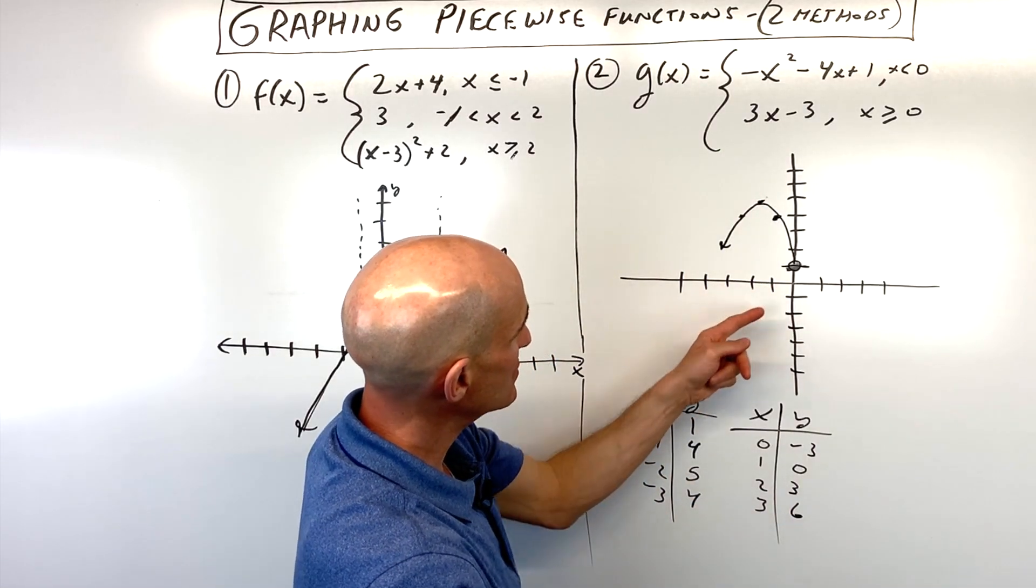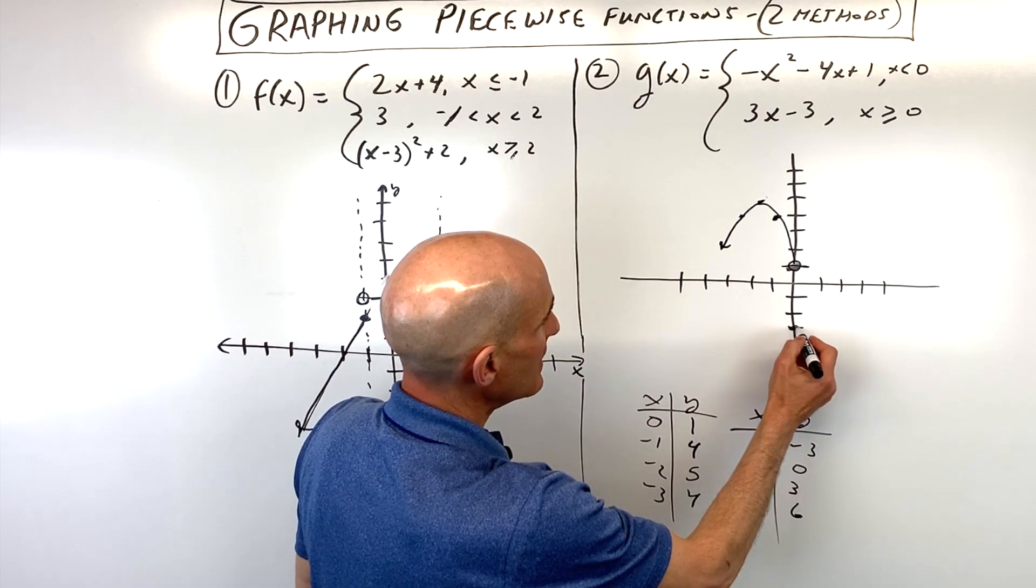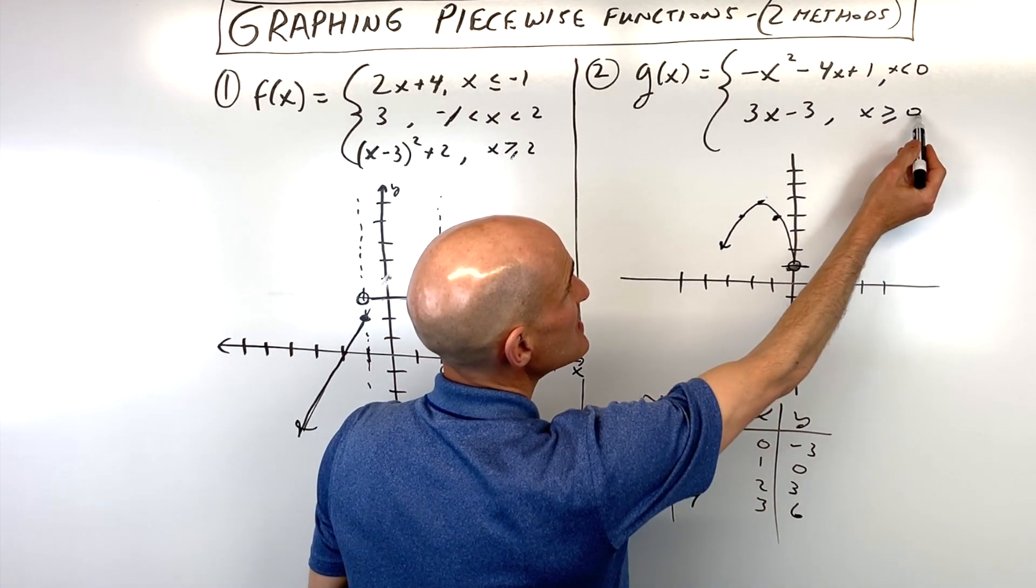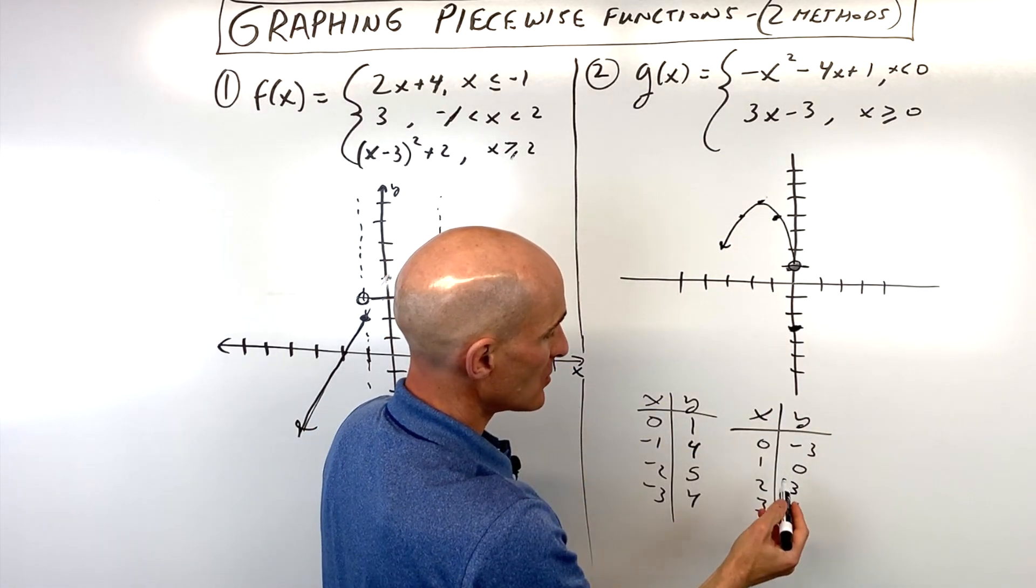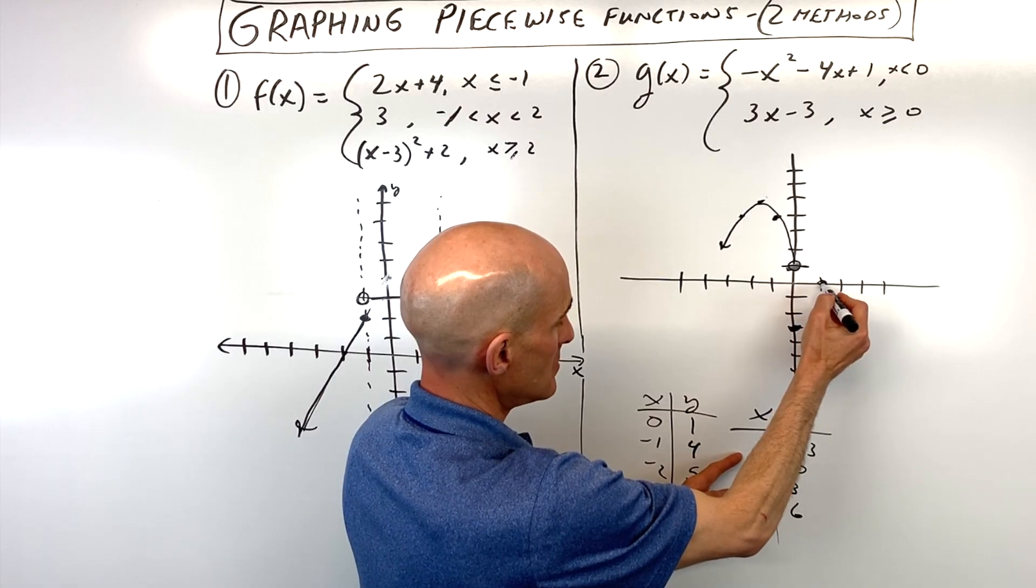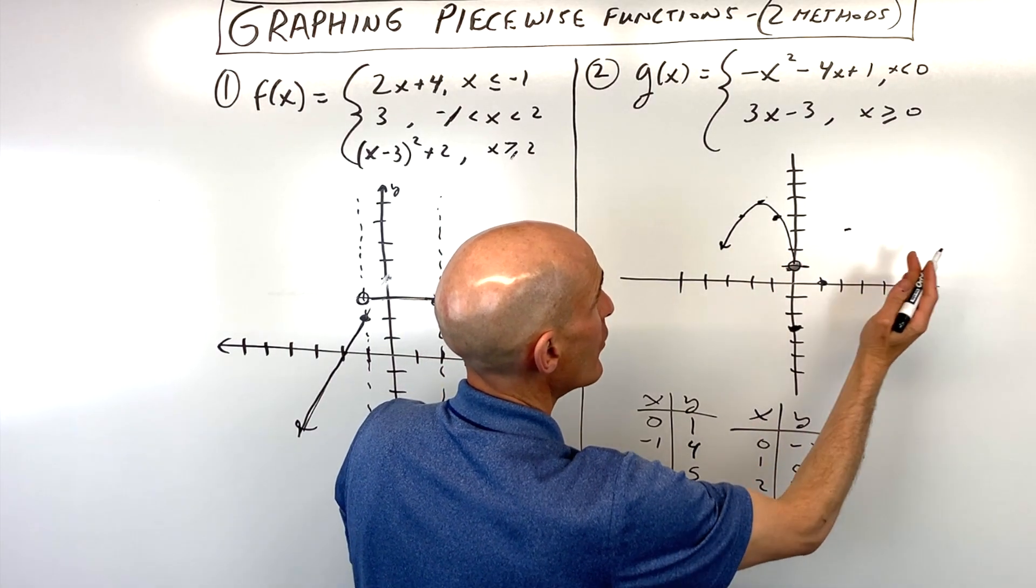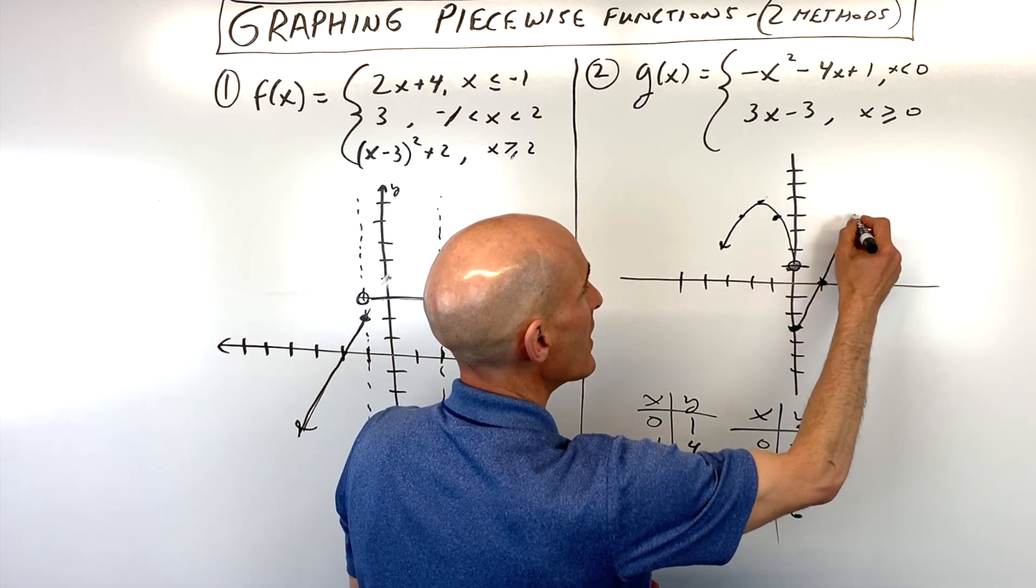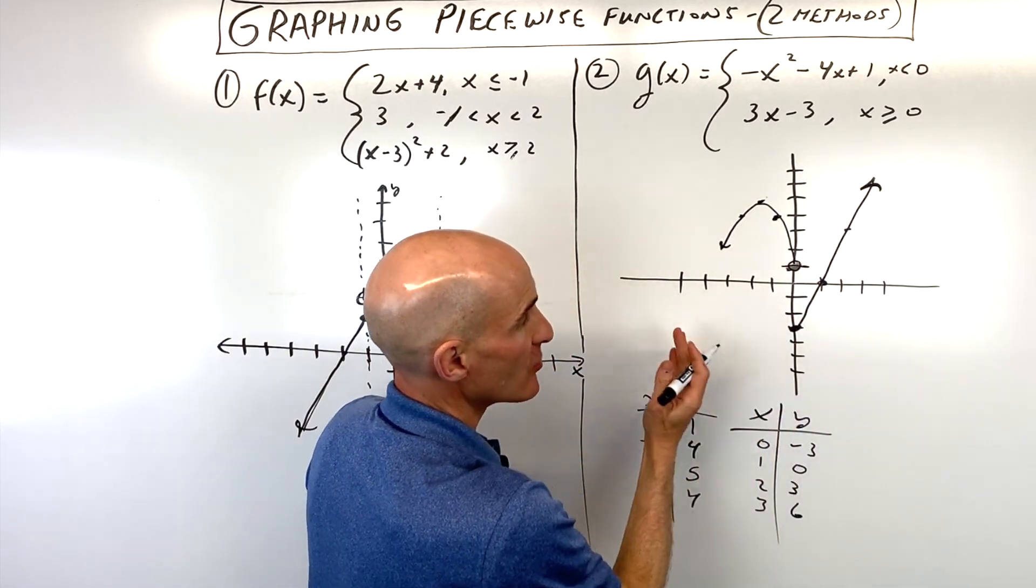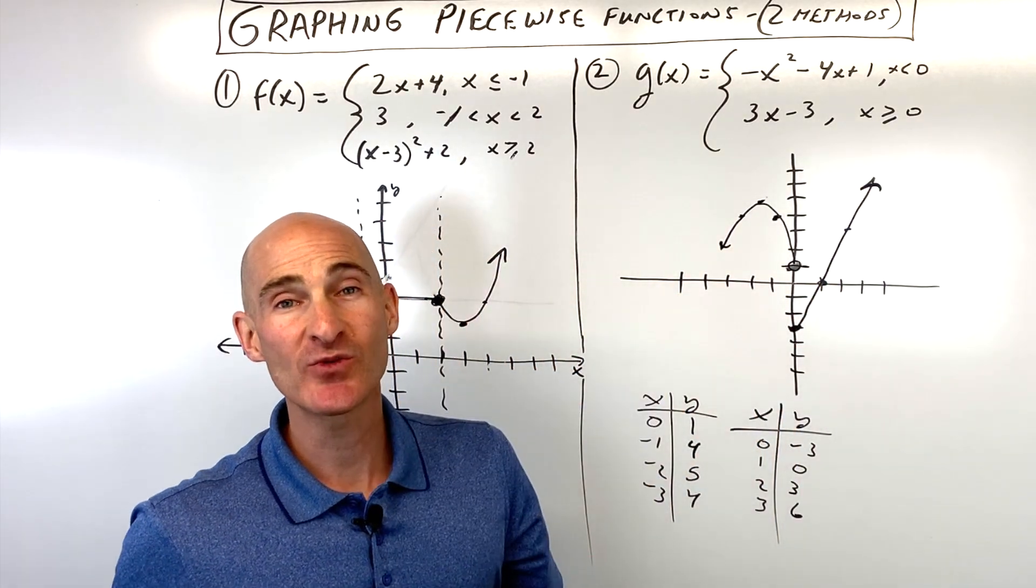So let's go ahead and plot these. So 0, negative 3 is right here. And that's going to be closed because it's equal to 0. So this point here is closed. 1, 0 is here. 2, 3 is here. And again, you can see we're going to the right or greater than or equal to 0. So we want this part of the graph, not the part here going to the left. And you've got your piecewise function.